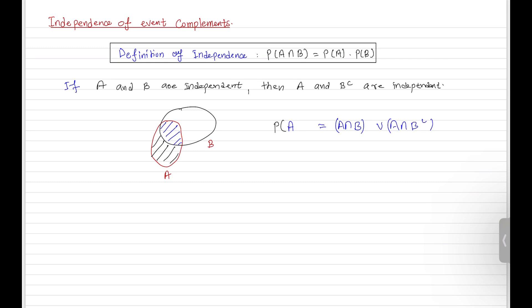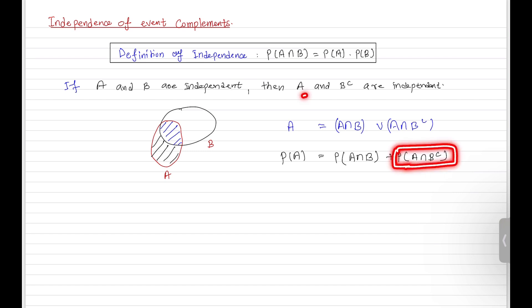So if you have to find the probability of event A, that will be equal to the sum of the probabilities. By additivity, probability of A equals probability of A intersection B plus probability of A intersection B complement. Now, since our assumption is that A and B are independent events, on the left-hand side we have probability of A, which equals the product of the individual probabilities.